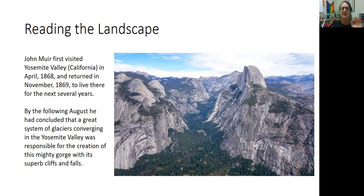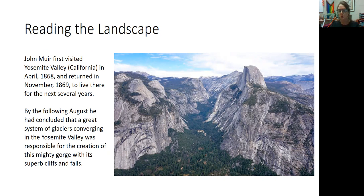He himself first visited Yosemite Valley in 1868 and then returned in 1869 to live there for the next several years because he loved the location so much. After being there for a couple years, he concluded that the entire valley was formed by glaciers — that they converged at Yosemite Valley, which is why you had this huge gorge surrounded by superb cliffs and waterfalls.